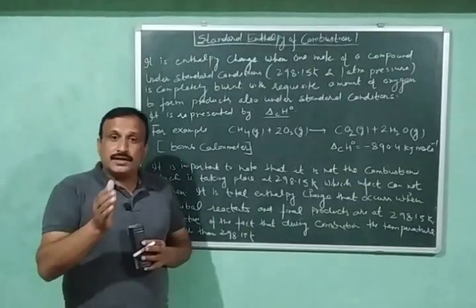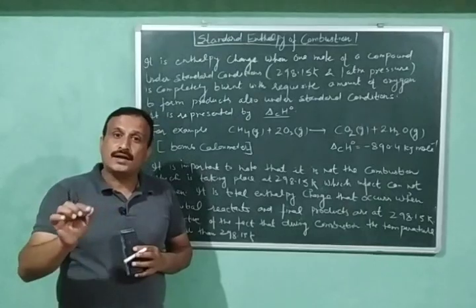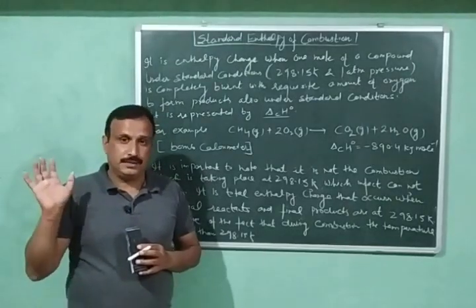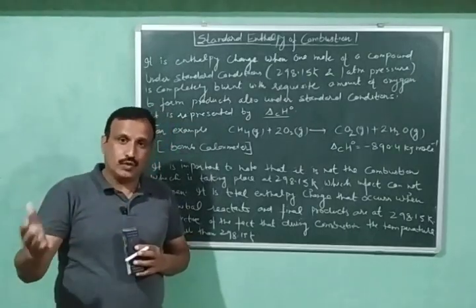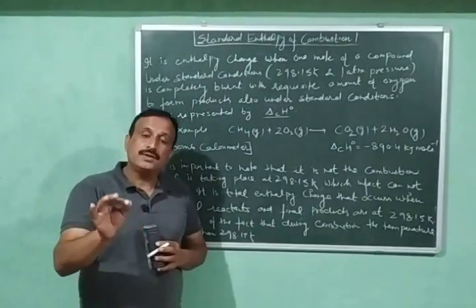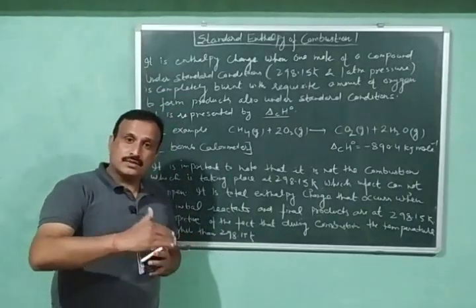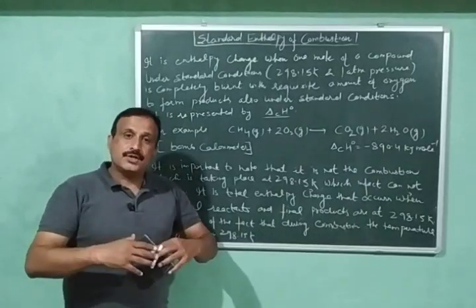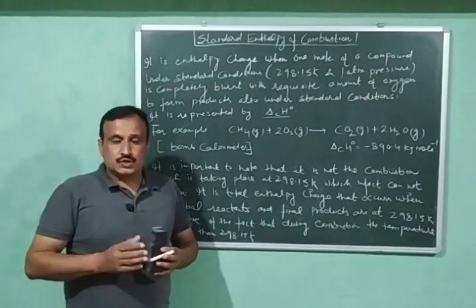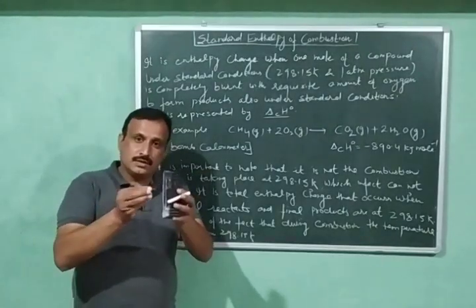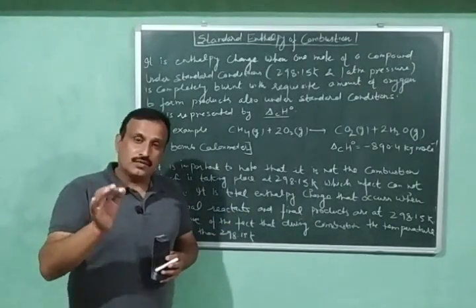This means that the initial reactants — that is, the reactants before combustion — will be at 298.15 Kelvin temperature. And the final products, that is the products when the combustion process is over, will also be at 298.15 Kelvin temperature. During the combustion process, the temperature will be higher than 298 Kelvin. The enthalpy change under these conditions will be called the Standard Enthalpy of Combustion.